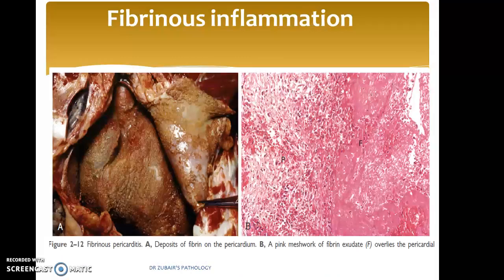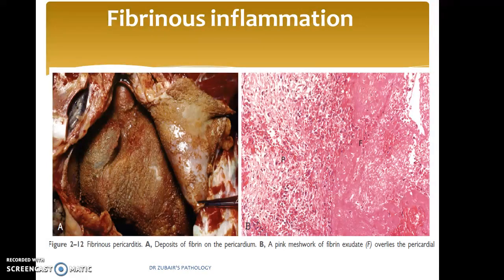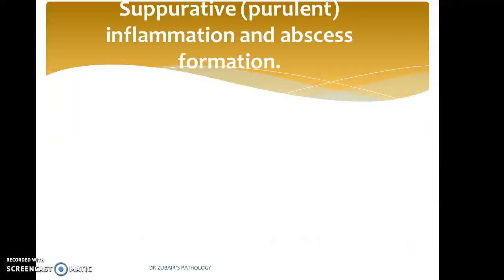Coming to fibrinous inflammation: this is inflammation associated with the deposition of fibrinous material. It can be seen as fibrinous pericarditis, where a fibrin meshwork develops as a manifestation of inflammation.